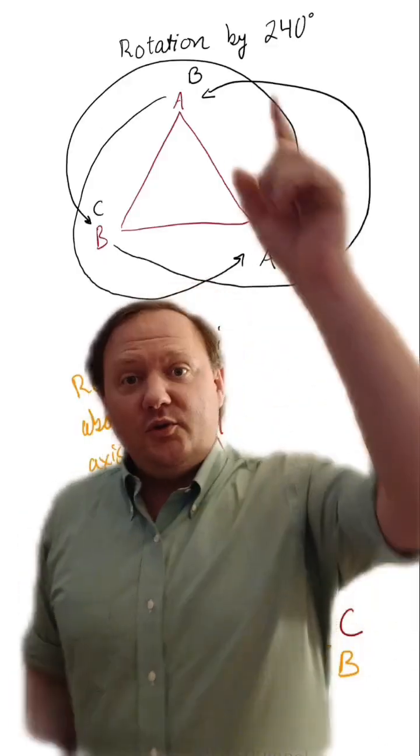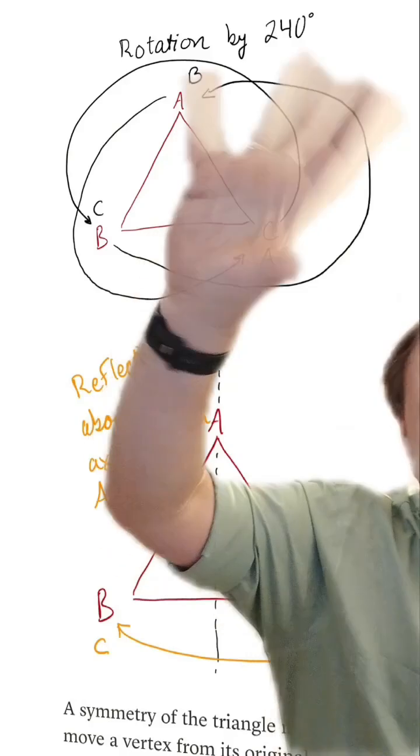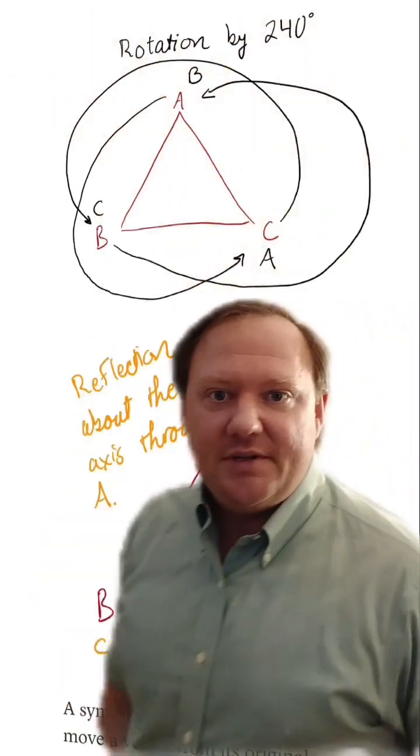You could do a 120 degree rotation again after that. That's equivalent to a 240 degree rotation and again it cycles the vertices around.